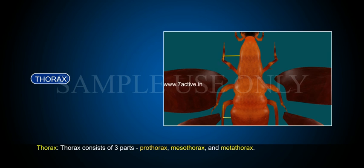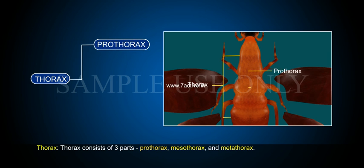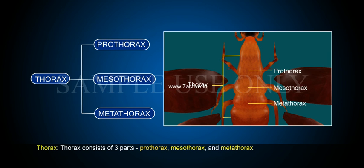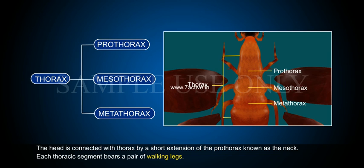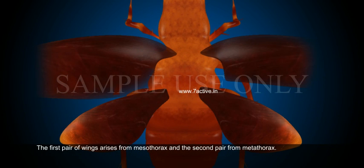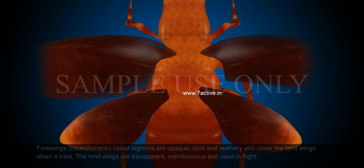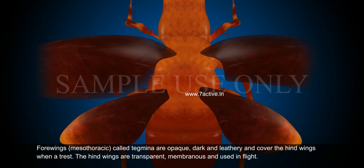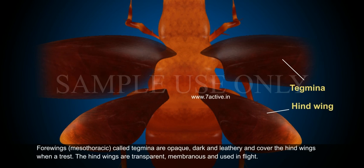Thorax. The thorax consists of three parts: prothorax, mesothorax and metathorax. The head is connected with the thorax by a short extension of the prothorax known as the neck. Each thoracic segment bears a pair of walking legs. The first pair of wings arises from the mesothorax and the second pair from the metathorax. The forewings, mesothoracic wings called tegmina, are opaque, dark and leathery and cover the hind wings when at rest. The hind wings are transparent, membranous and used in flight.